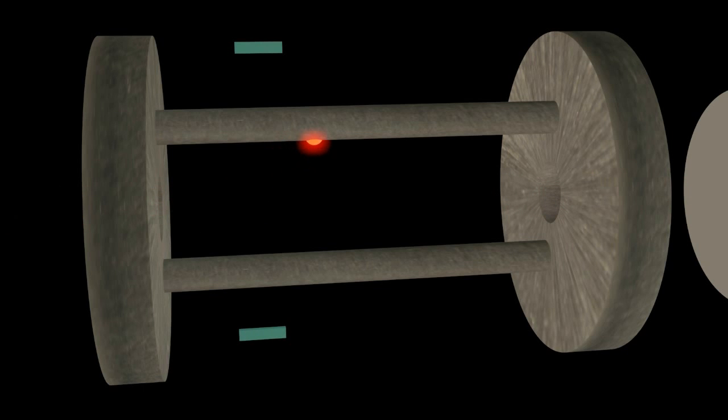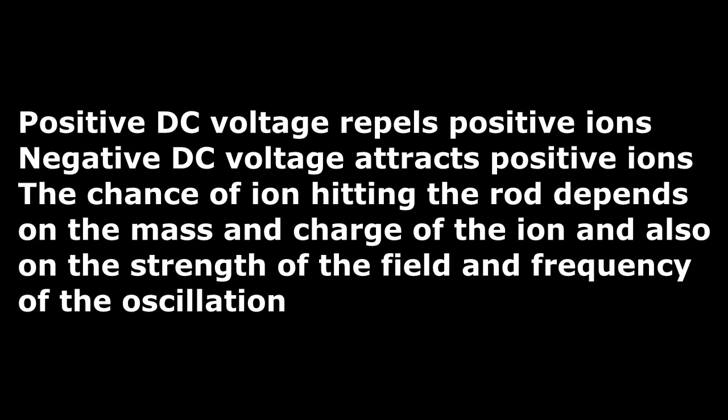If an alternating voltage is applied, then the chance of an ion hitting the metal rod depends on the charge and mass of the ion, and also on the strength of the field and frequency of the oscillation.